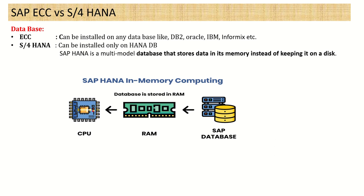The very first difference is at the database level. ECC can be installed on any database like DB2, Oracle, IBM, Informix, etc. But users were facing performance issues — some reports were taking a lot of time to run, especially for companies with a huge amount of data.